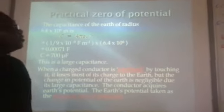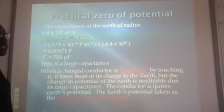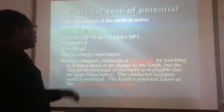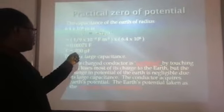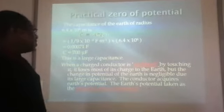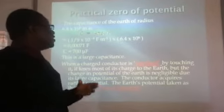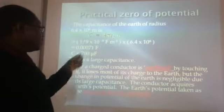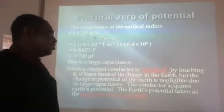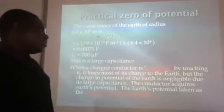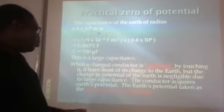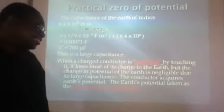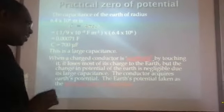Moving on to the practical zero of potential: the capacitance of the Earth, with radius 6.4 × 10⁶ m, is given by C = 4πε₀R, which works out to 700 microfarads — a very large capacitance. When a charged conductor is earthed by touching it, it loses most of its charge to the Earth, but the change in the Earth's potential is negligible due to its large capacitance. Therefore, the Earth's potential is taken as the practical zero of potential.